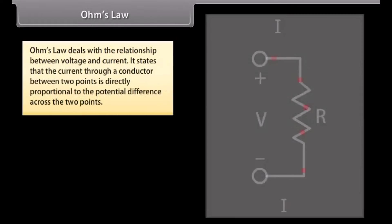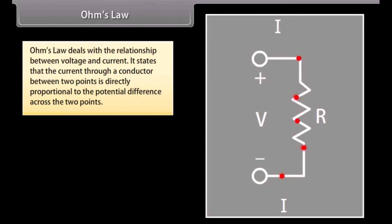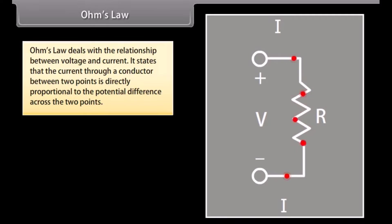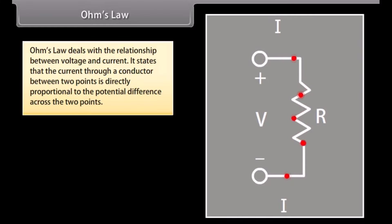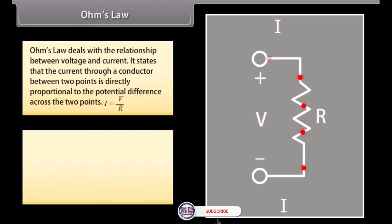Ohm's law deals with the relationship between voltage and current. It states that the current through a conductor between two points is directly proportional to the potential difference across the two points.